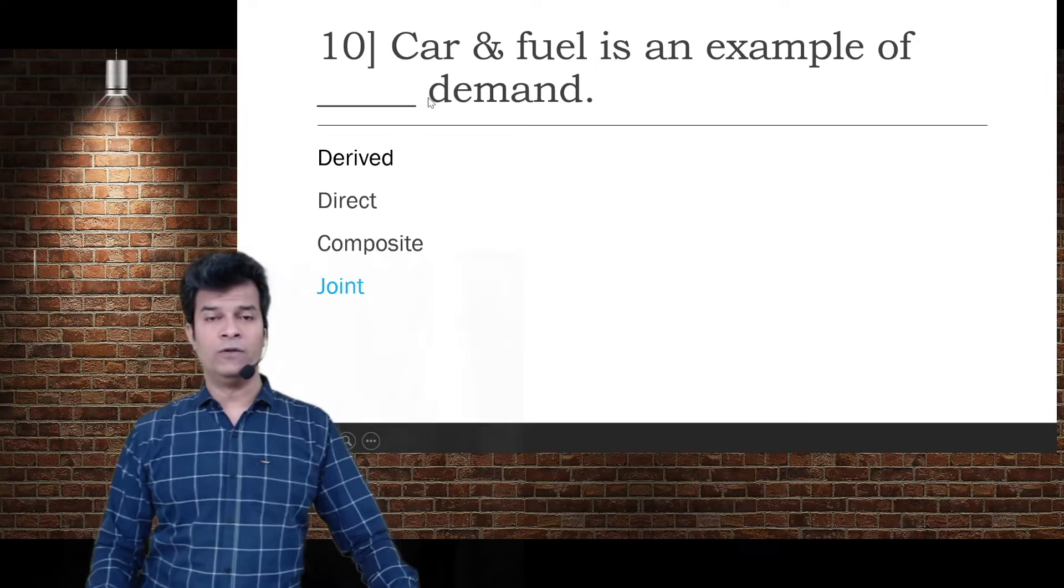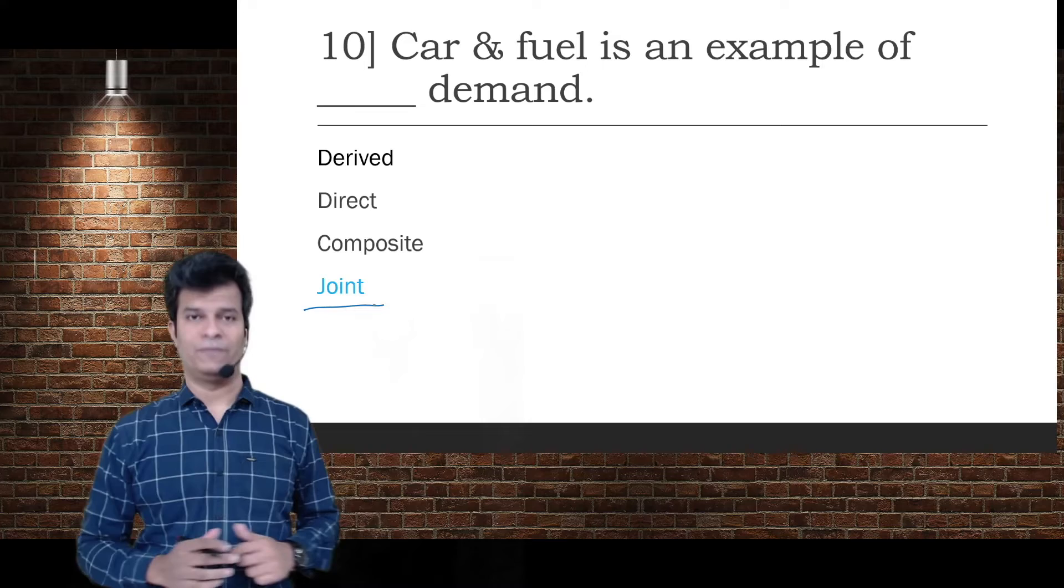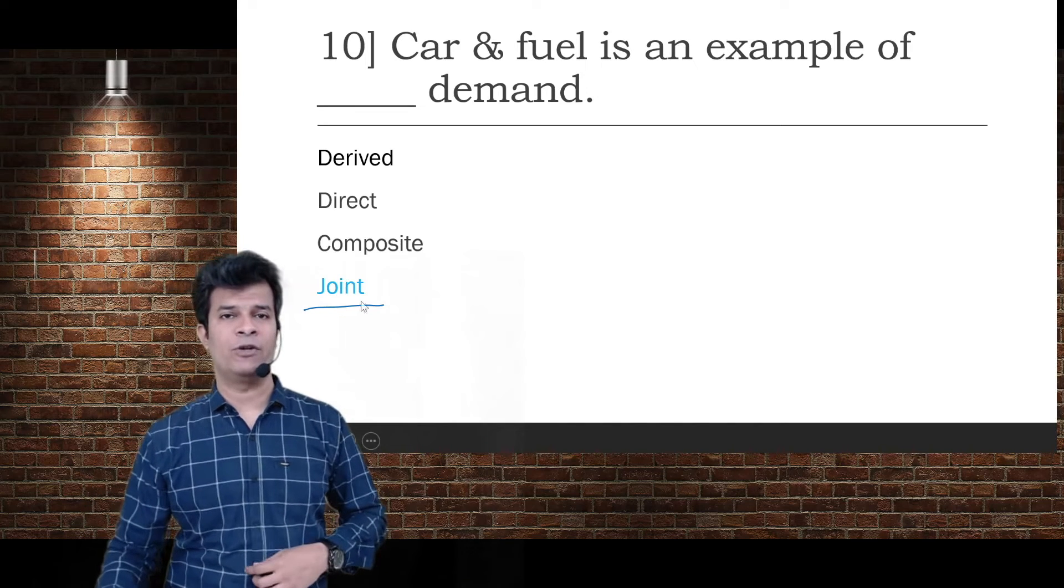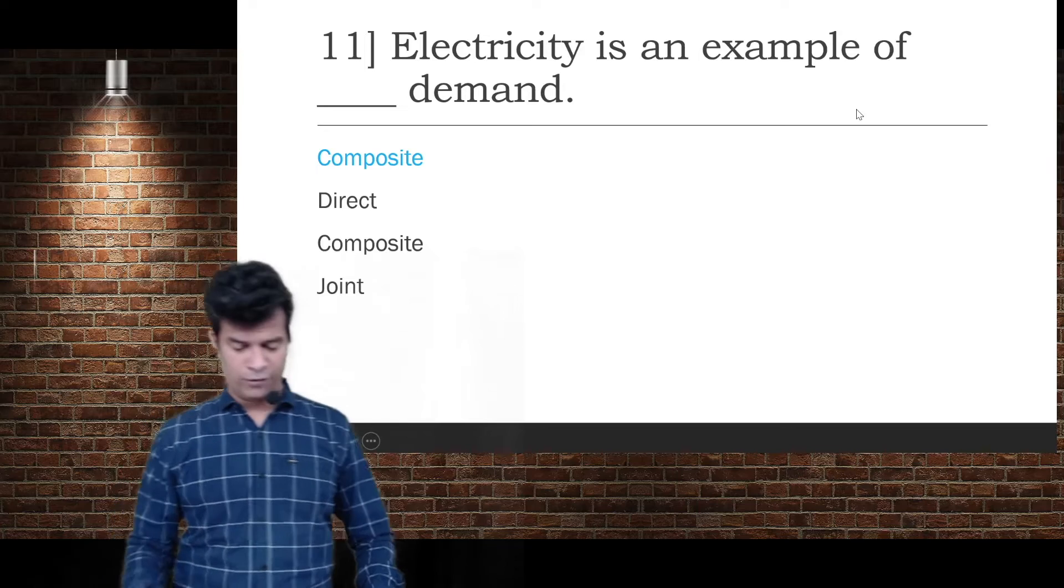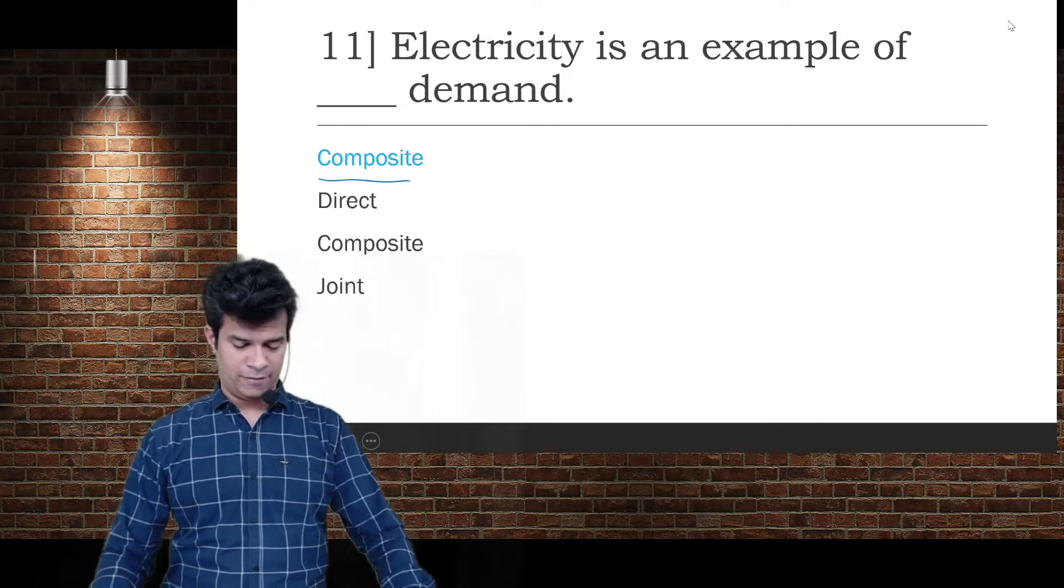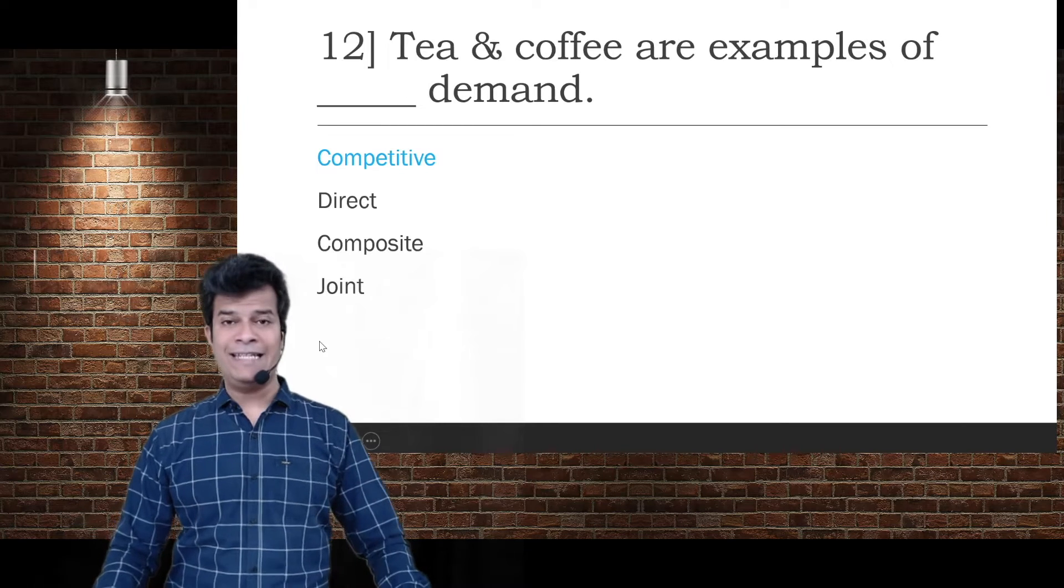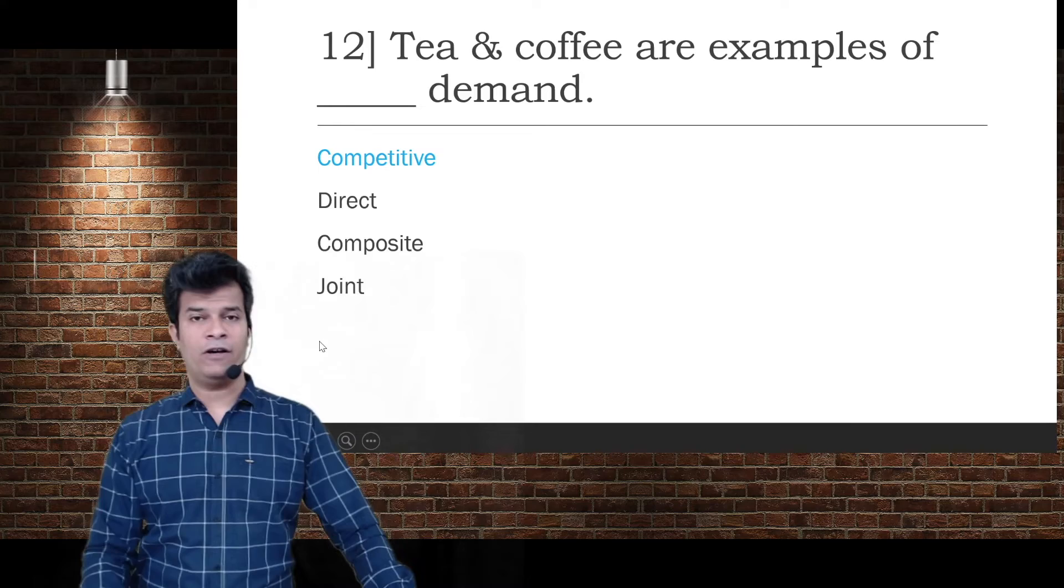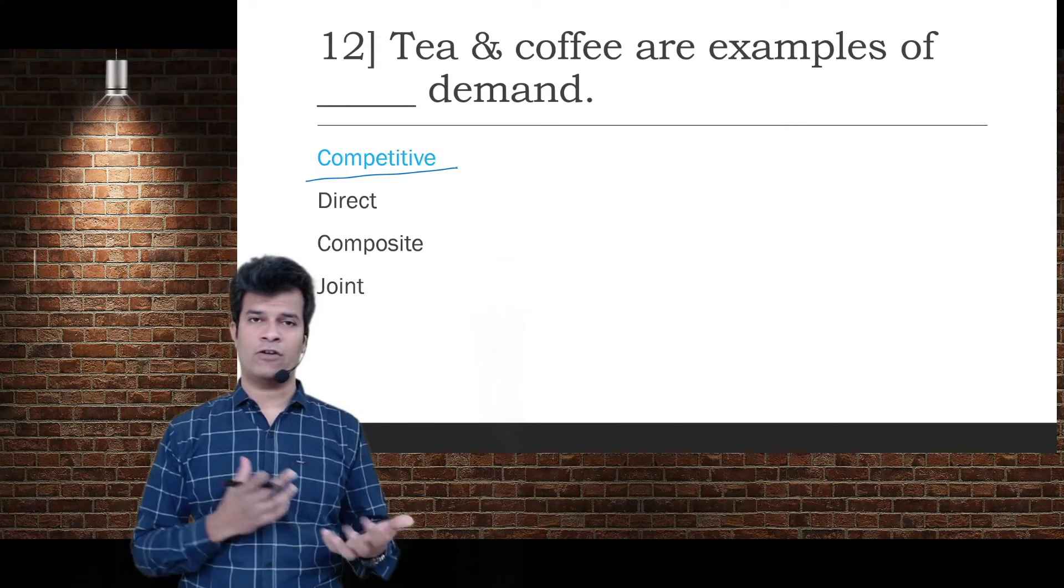Car and fuel is an example of joint demand. Electricity is an example of composite demand. Tea and coffee are examples of competitive demand - they compete with each other and are called substitutes.